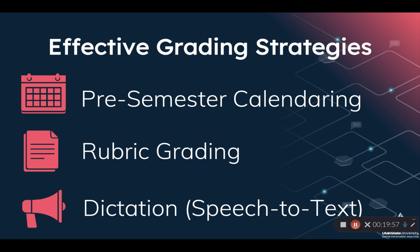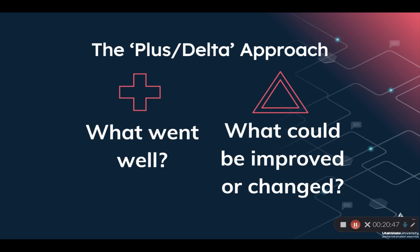The next semester they constructed a rubric for that assignment, detailing what's required in each paragraph and the characteristics of the paper. Their grade time greatly decreased because they could quickly identify what a student missed and move on to the next section. Finally, we have the opportunity through technology to use dictation or speech-to-text, which lets you put feedback down faster than you can type, cutting down feedback time on every assignment. Software like Word and Google Docs all have dictation tools to relatively quickly and accurately capture your thoughts to share with students.